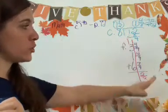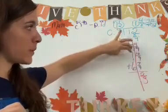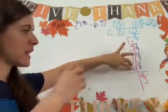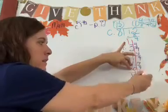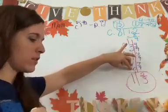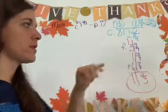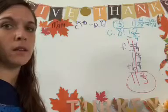So we have 1 and 2 thirds. Now we can add our números enteros. 1 plus 3 is 4 plus 1 is 5 plus 6 is 11. And there's your answer right there. 11 and 2 thirds.